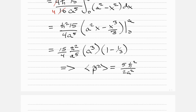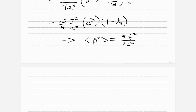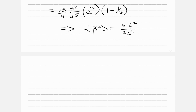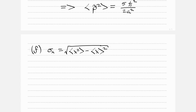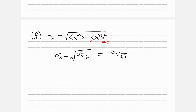Just simple one-line algebra gets you there. For part f, σ_x equals the square root of ⟨x²⟩ minus ⟨x⟩². Since ⟨x⟩ equals 0, squaring it is still 0. So σ_x equals the square root of a²/7, which equals a over the square root of 7.